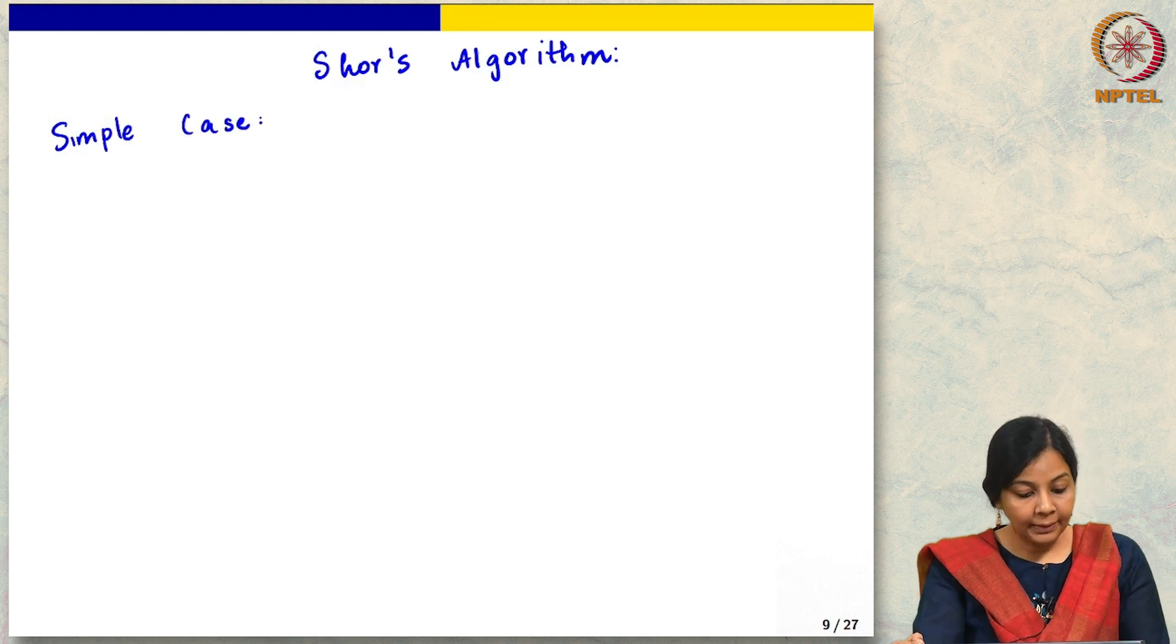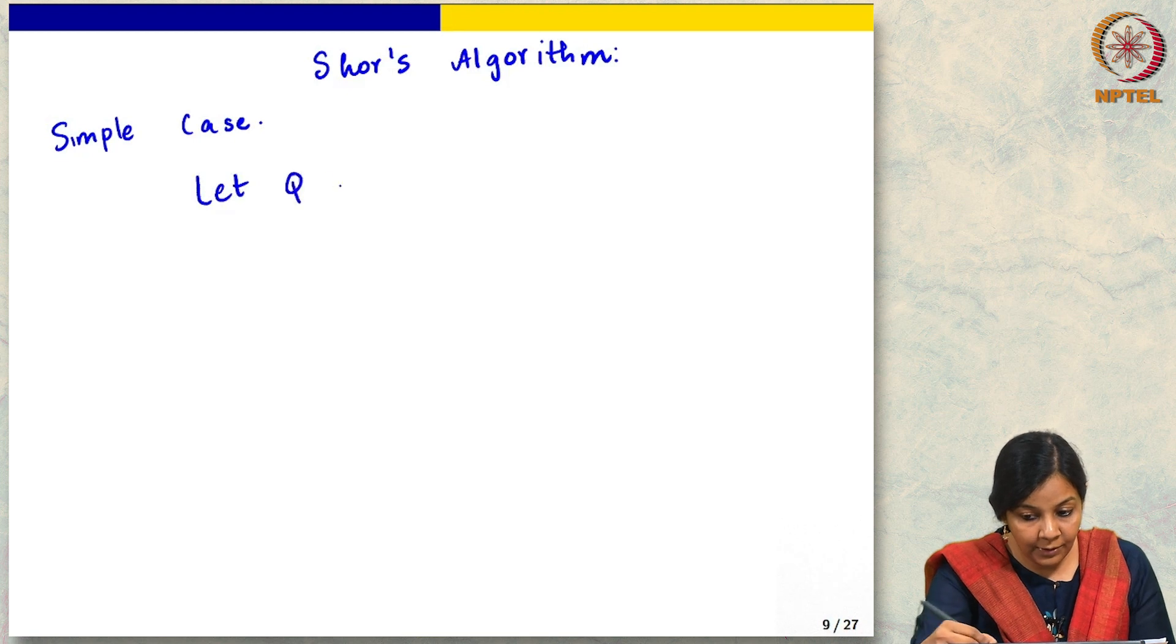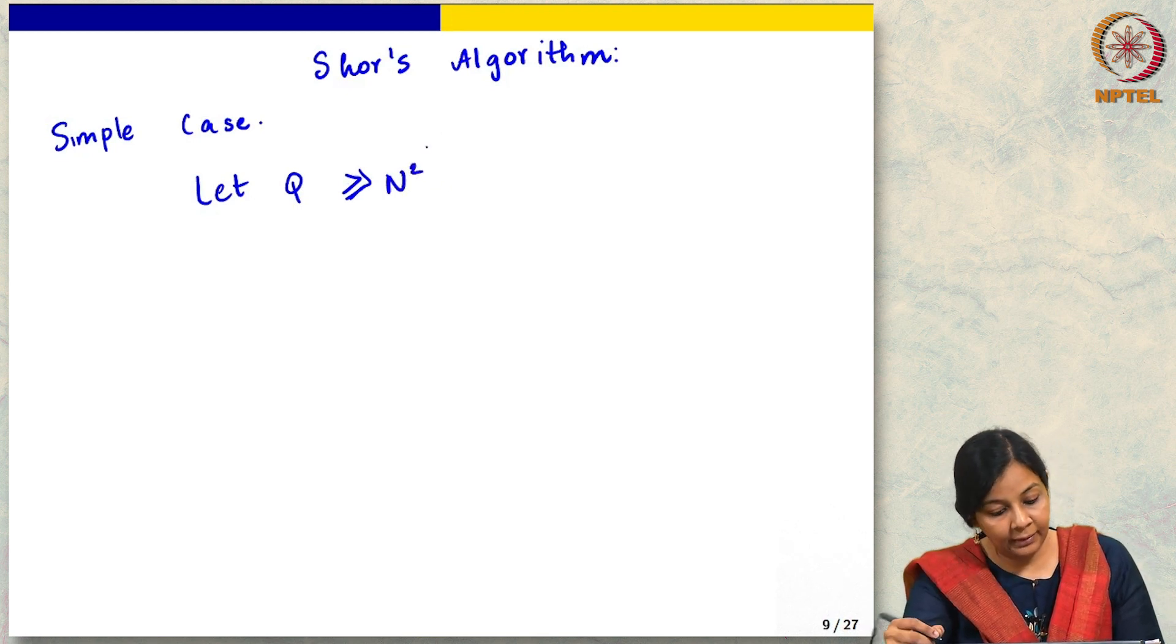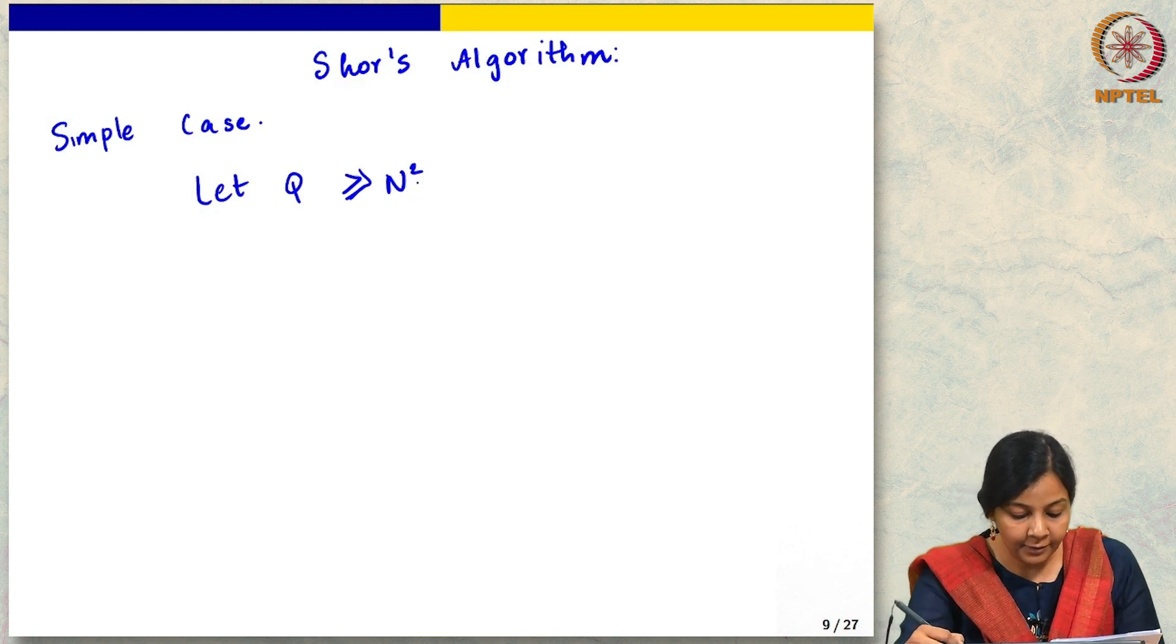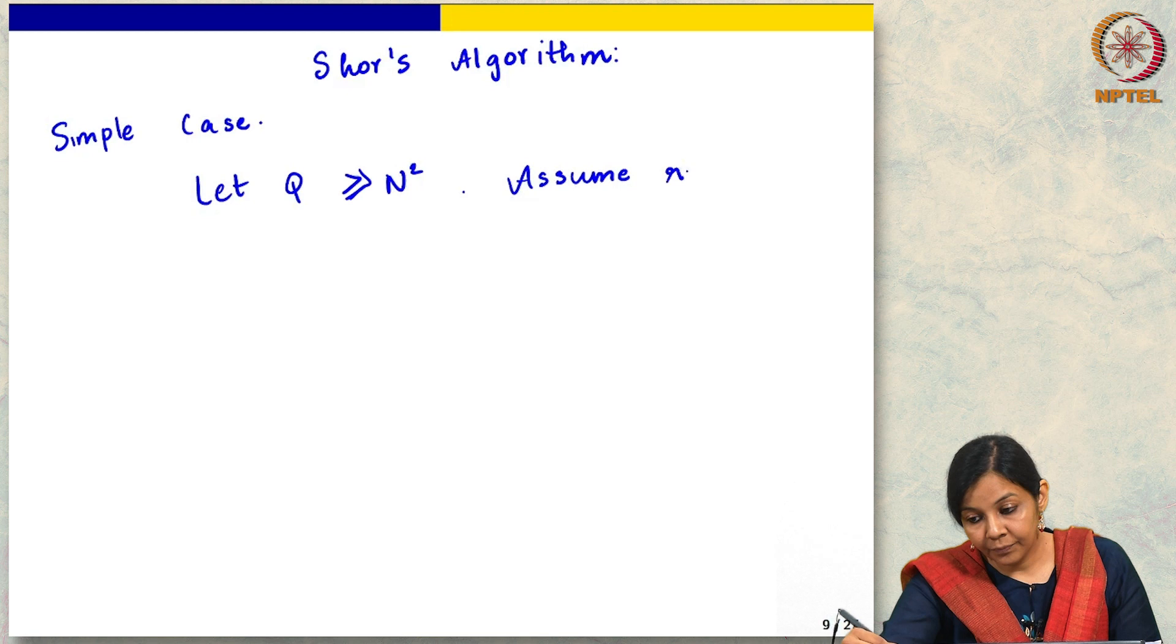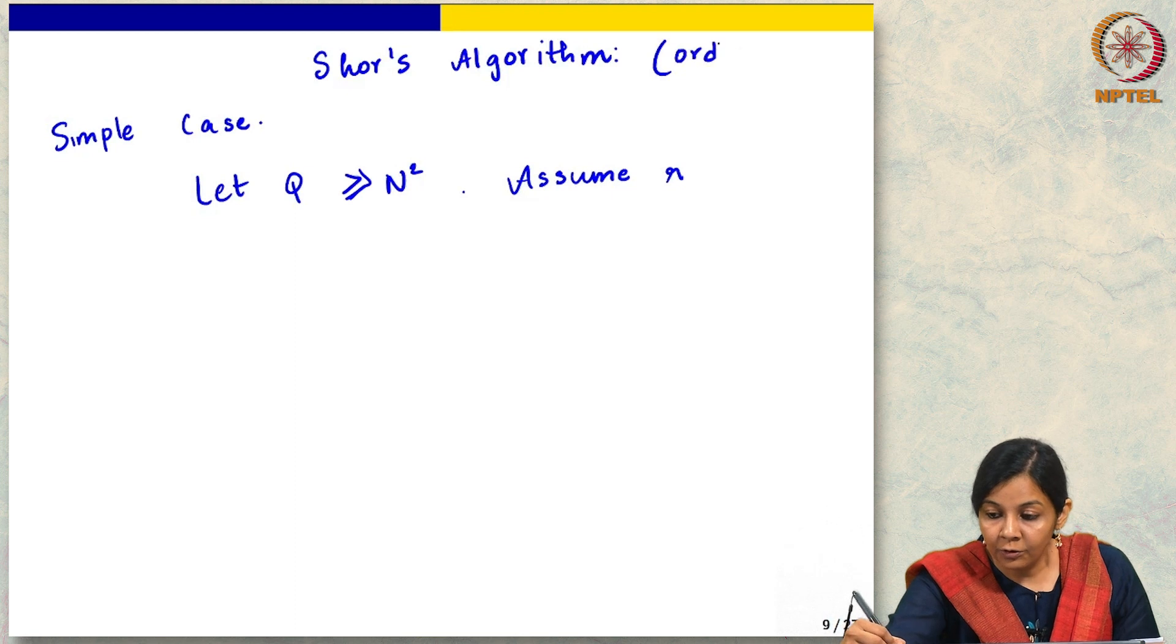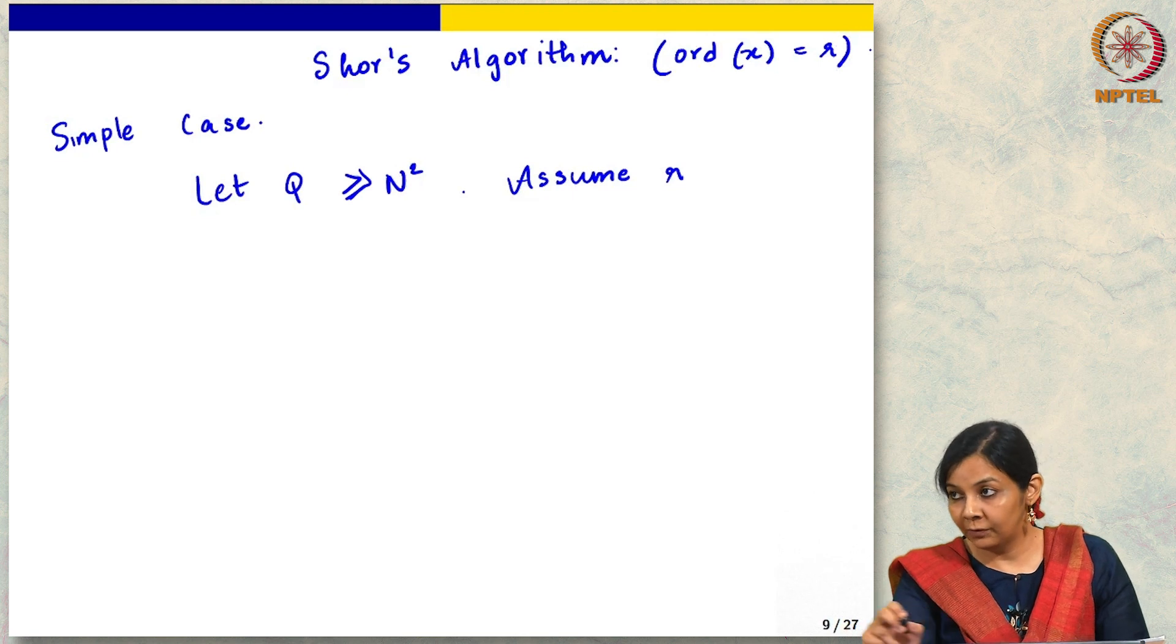I am going to say that let q be some sufficiently large number. Let us say that q is much greater than even n squared, where capital N is what we are trying to factor, and let us assume that the order of the element, so Shor's algorithm is going to let us compute order x, which is what we wanted according to the previous theory that we developed.